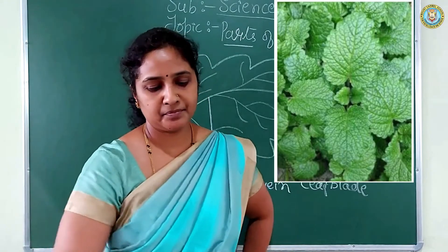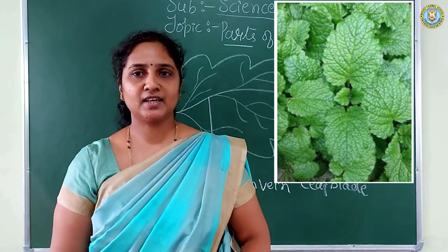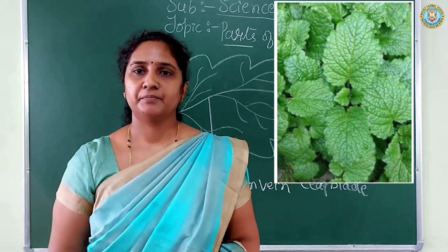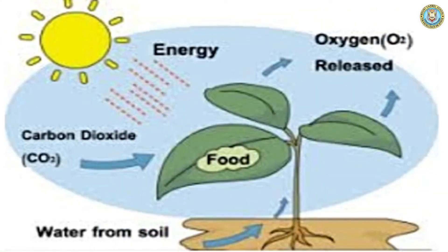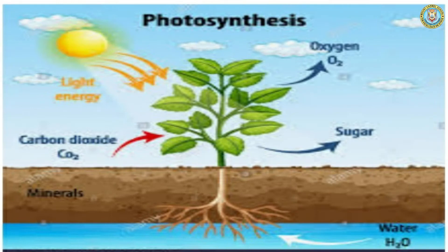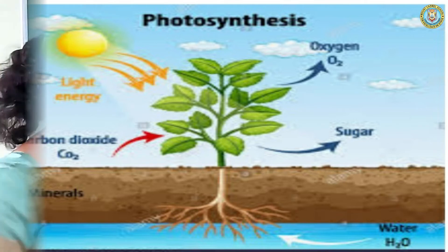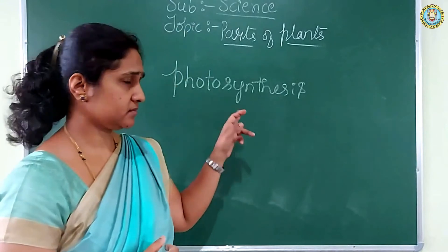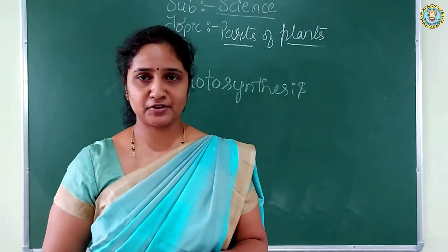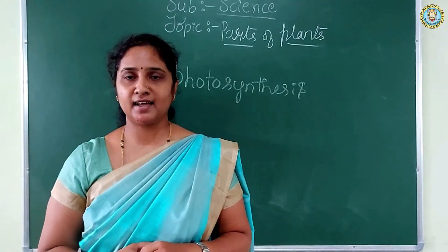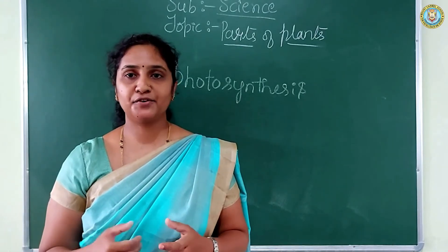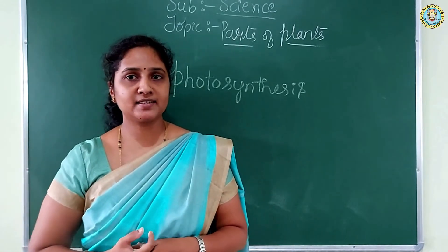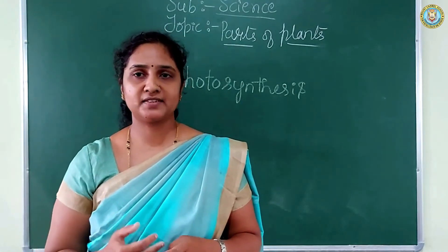Leaves are almost green in color in most plants. Leaves are able to prepare food for the plant by a process called photosynthesis. Leaves prepare food for the plant by using sunlight, air and water — this process is called photosynthesis. Leaves are represented as the food factory of the plant because they prepare food for the plant, and they also control gaseous exchange of gases such as oxygen and carbon dioxide.